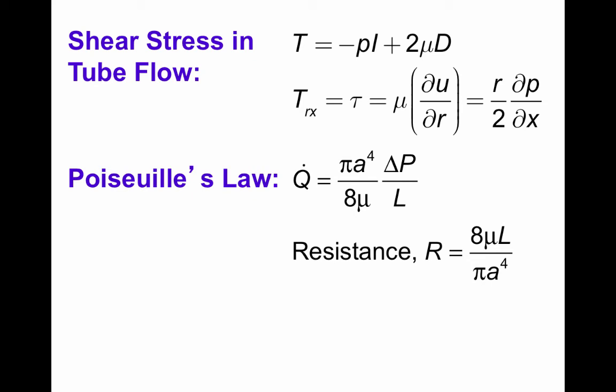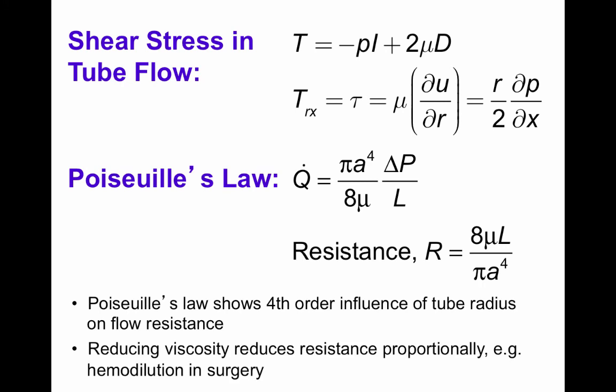Resistance increases proportionally to tube length and fluid viscosity, and in inverse proportion to the fourth power of diameter. Reducing viscosity also reduces resistance proportionately. An example is hemodilution in surgery, where blood is replaced with fluid, which can be beneficial for maintaining blood flow.